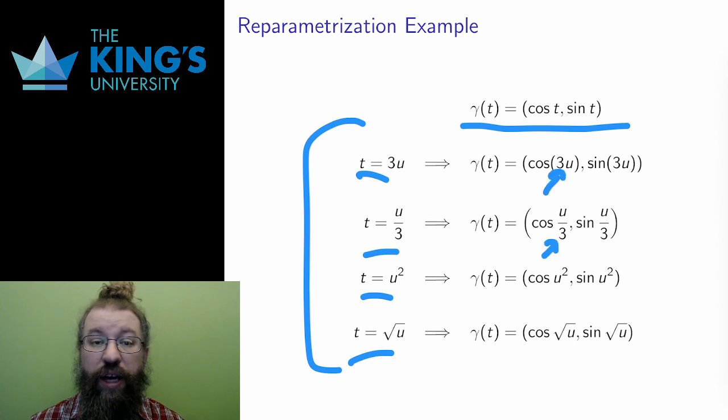The right side shows the curves with the replacements. All four replacements still trace the circle, just at different rates.